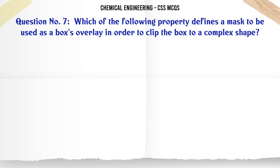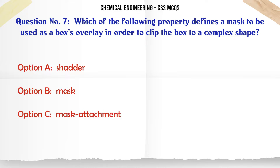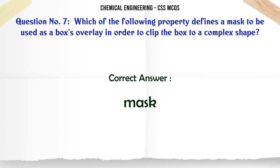Which of the following property defines a mask to be used as a box overlay in order to clip the box to a complex shape? A. Shutter. B. Mask. C. Mask attachment. D. Mask image. The correct answer is: Mask.